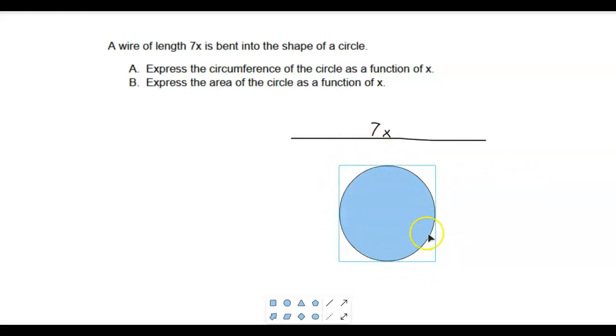So the entire circumference here, and we can write that down as well, so kind of off to the side, we know that our circumference of this circle is going to be equal to 7x and we're going to use that to help us solve this problem. It says express the circumference of the circle as a function of x.